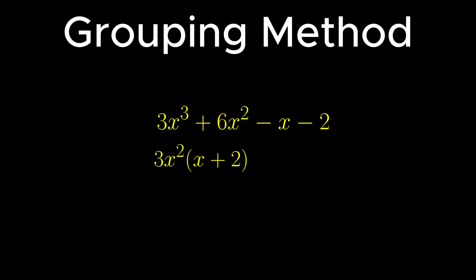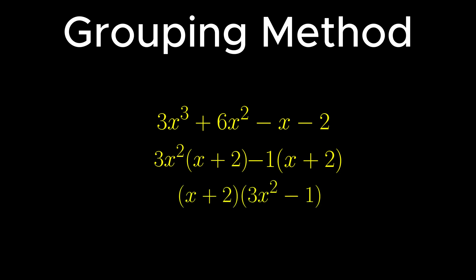Similarly, taking minus 1 as the common factor from the second group, we get minus 1 into x plus 2. Since the terms are in multiplication and hence considered as 1, therefore taking x plus 2 as the common factor from these terms, we get x plus 2 into 3x squared minus 1. Here x plus 2 acts as the first factor, whereas 3x squared minus 1 acts as the second factor for the given expression 3x cubed plus 6x squared minus x minus 2.